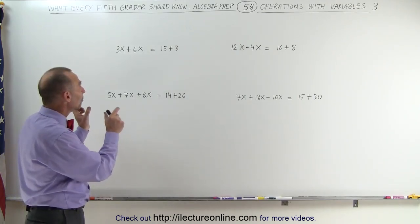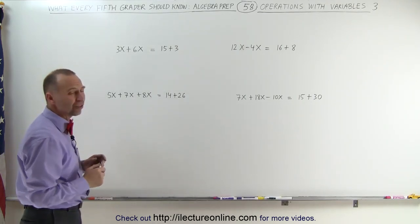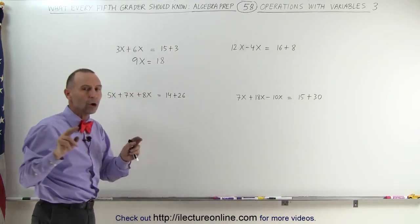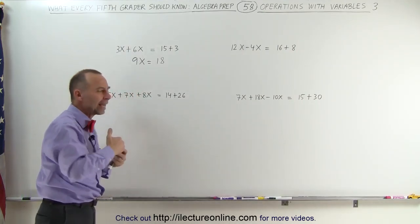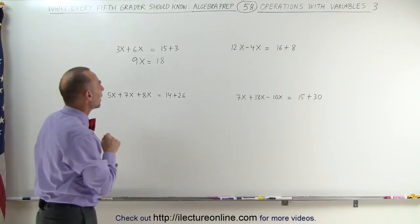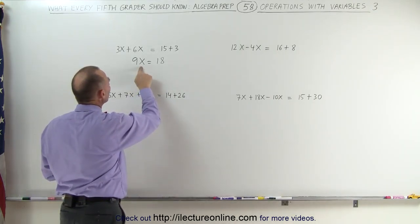Now let's simplify both sides of each of the equations and see what we get. On the left side here, we get 3x plus 6x is equal to 9x. That is equal to 15 plus 3, which is equal to 18.